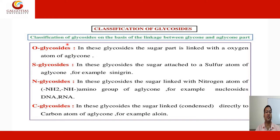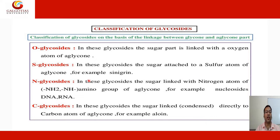Classification of glycosides based on the linkage between the aglycon and glycon part: O-glycosides — the sugar part is linked with an oxygen atom of the aglycon. S-glycosides — the sugar is attached to a sulfur atom of the aglycon; for example, sinigrin. N-glycosides — the sugar is linked with a nitrogen atom of an amino (NH) group of the aglycon; for example, nucleosides of DNA and RNA.